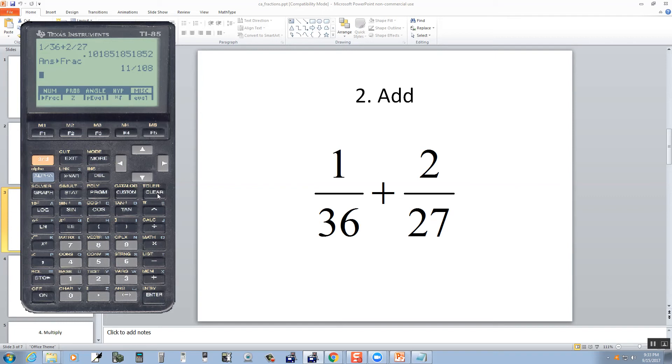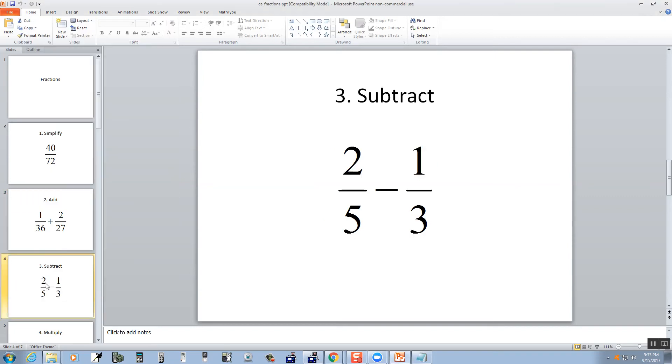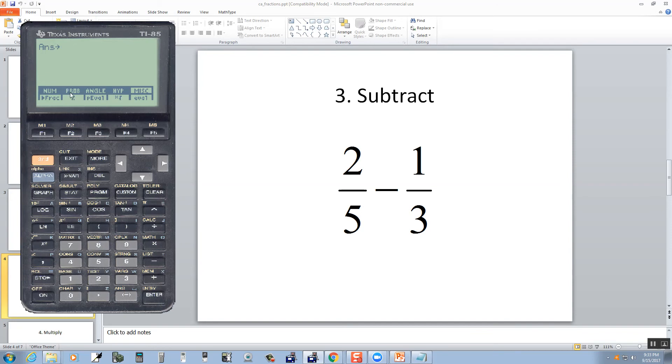Now one thing I want to point out here is if I press clear and I go to the next problem. If I leave this menu up here, if I now do 2 divided by 5 minus 1 divided by 3, and I do enter, and I get a decimal.